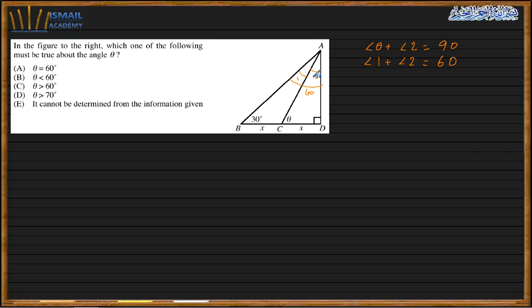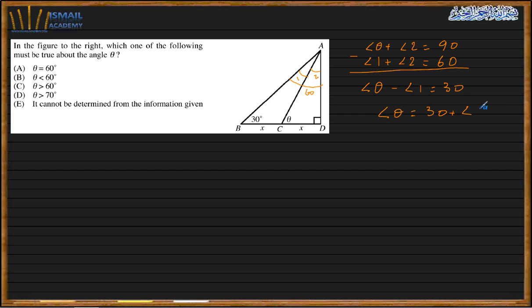Since angle one plus angle two equals 60° and theta plus angle two equals 90°, subtracting gives theta minus angle one equals 30°, which means theta equals 30° plus angle one.